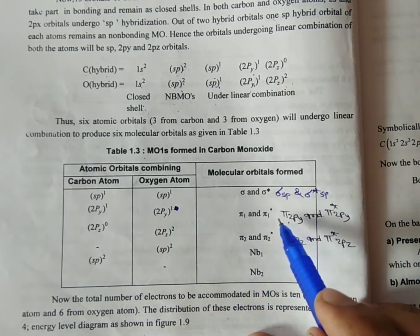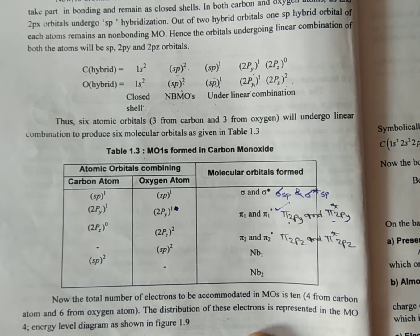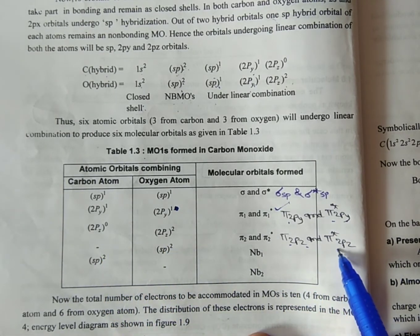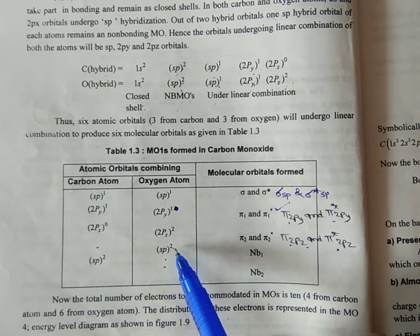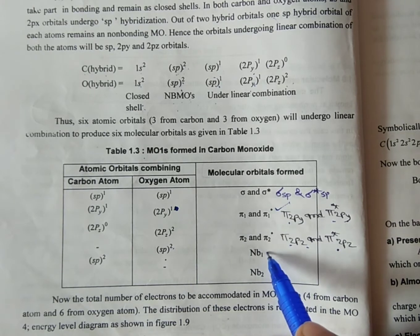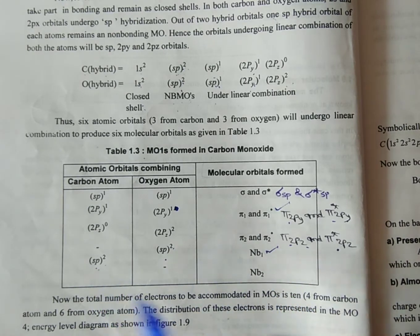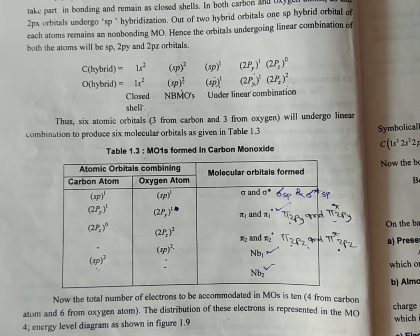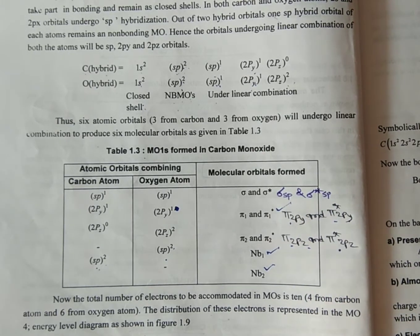The pi symmetry orbitals form: pi 2py and pi star 2py. Then 2pz and 2pz combine to form pi 2pz and pi star 2pz. The 1 SP orbital of oxygen with 2 electrons remains as non-bonding one. The 2 SP of carbon with 2 electrons is non-bonding two. There are 2 non-bonding orbitals remaining, along with pi orbitals and sigma orbitals.